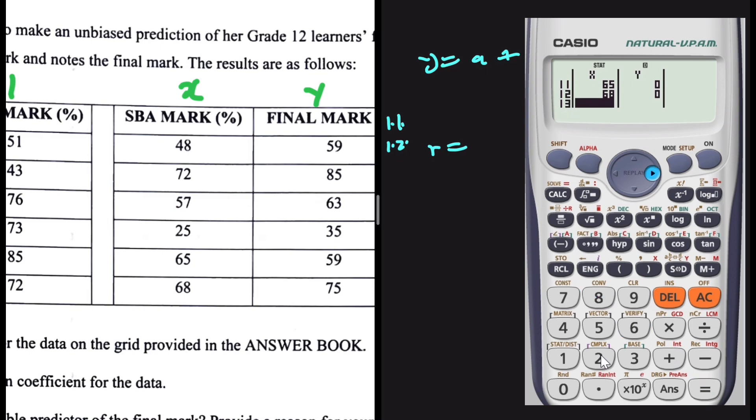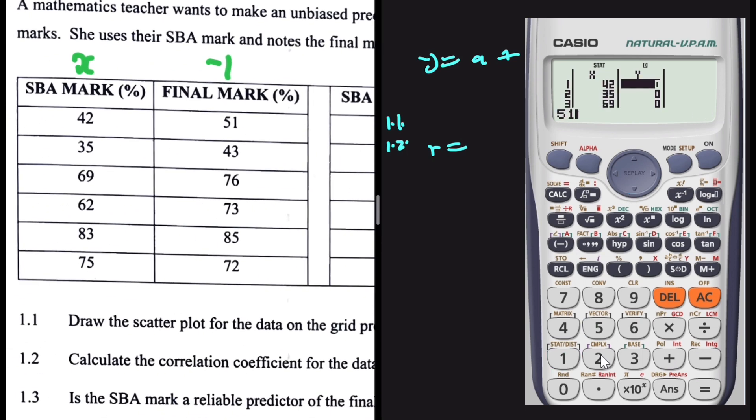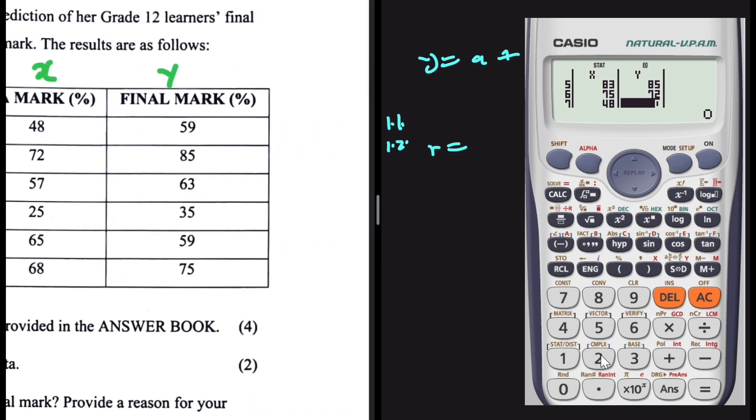You have to verify your entries at least two times because if you entered a number incorrectly, then your answers are going to be incorrect. So now let's put in the y values. We have 51, 43, 76. You don't just put the y values randomly. You put it close to its x value, right? And 72. Let's go to the other column. We have 59, 85, 63, 35, 59, and 75. There we go. We have our data inserted on our calculator.